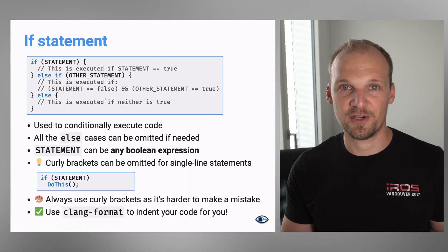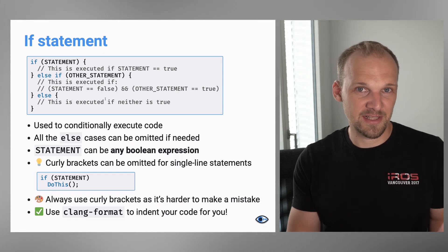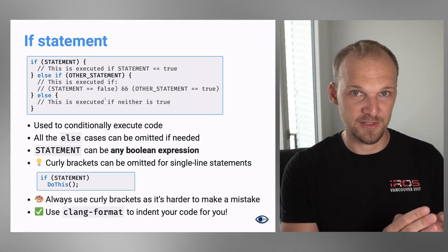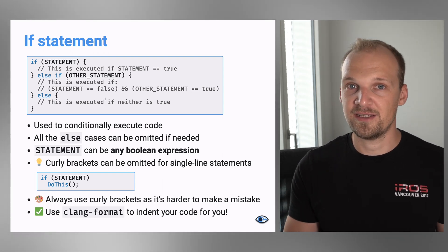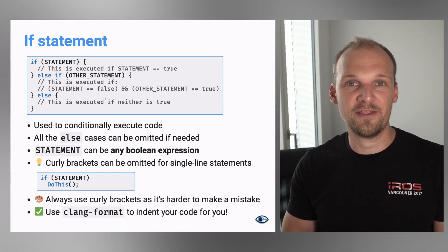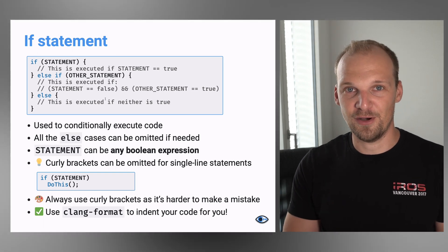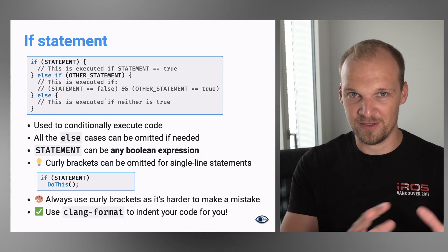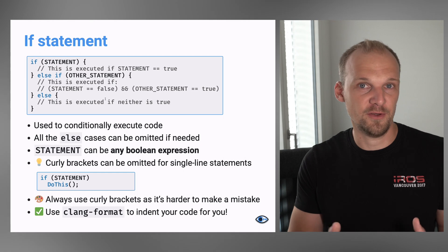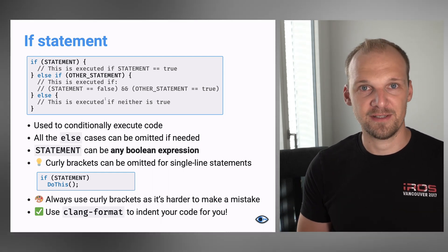We start talking about control structures with the if statement. The if statement allows you to execute a certain piece of code if a certain statement is true, and a different piece of code if it's not true. You can bunch them all together and call different if statements after an else statement. You also don't have to use an else statement — if you only have an if and do one action there, there is no need for the else.